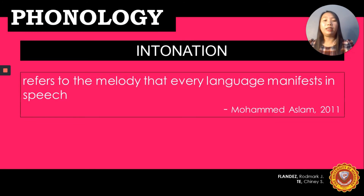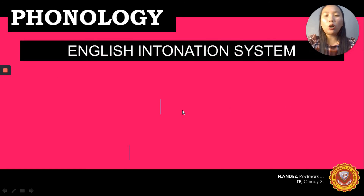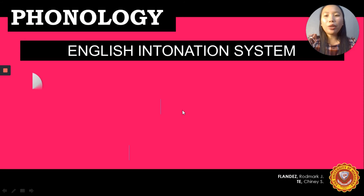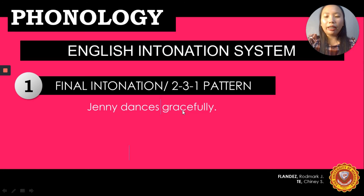Intonation refers to the melody that every language manifests in speech, according to Muhammad Azlam, 2011. When the voice goes up and down as the speaker changes thoughts or emotions, he is producing a melody — in speech, this tone is called intonation. We have three intonation patterns. The first is the final intonation, or rising-and-falling intonation, also called the 2-3-1 pattern. This pattern is used in declarative and imperative statements and information questions. Example: 'Jenny dances gracefully.'